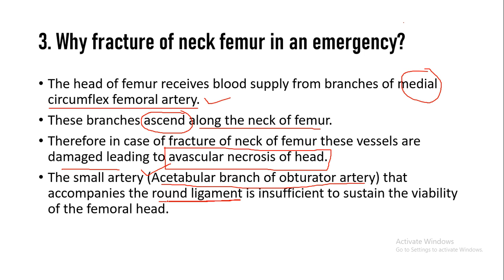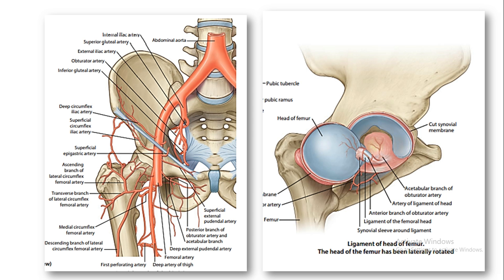However, the acetabular branch of the obturator artery is not sufficient to sustain the viability of the femoral head. So whenever you answer this question, write that tearing of all the blood vessels occurs with the fracture of the neck, making it an emergency — otherwise it will lead to avascular necrosis of the head of femur. In the diagram, you can see the blood vessels passing through the anterior surface of the neck of femur. When it gets fractured, these arteries rupture. You can also see the round ligament where the acetabular branch of the obturator artery is located.